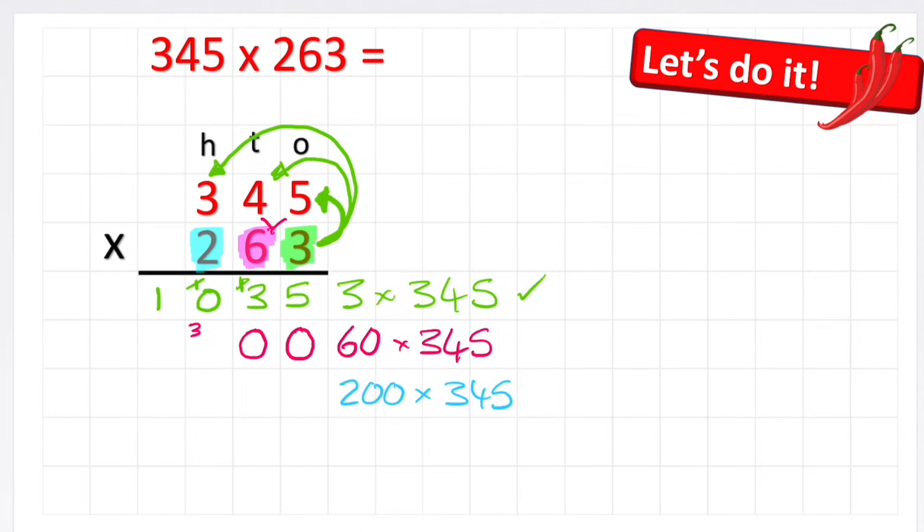Now I can do 6 times 4, and 6 times 4 is 24, plus my 3, 27. Small 2, big 7, cross out my 3. And finally for this row, 6 times 3, and 6 times 3 is 18, plus my 2 gives me 20. Cross out my 2. So my answer to 60 times 345 is 20,700.